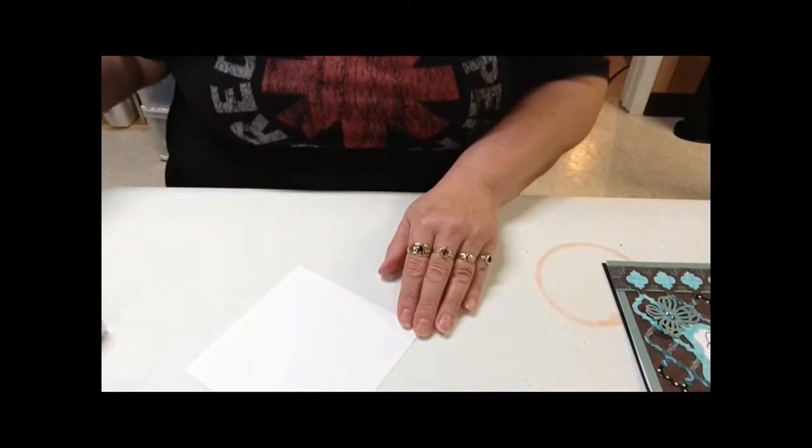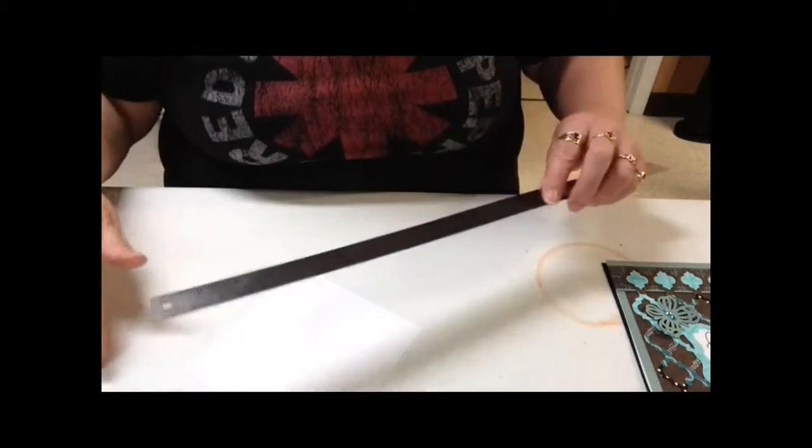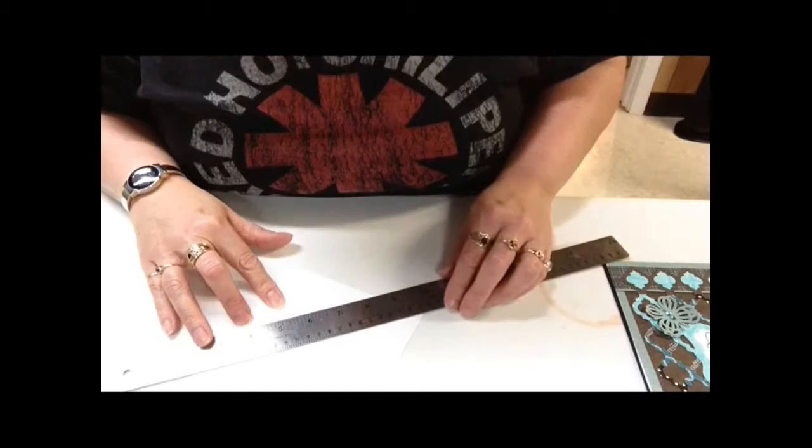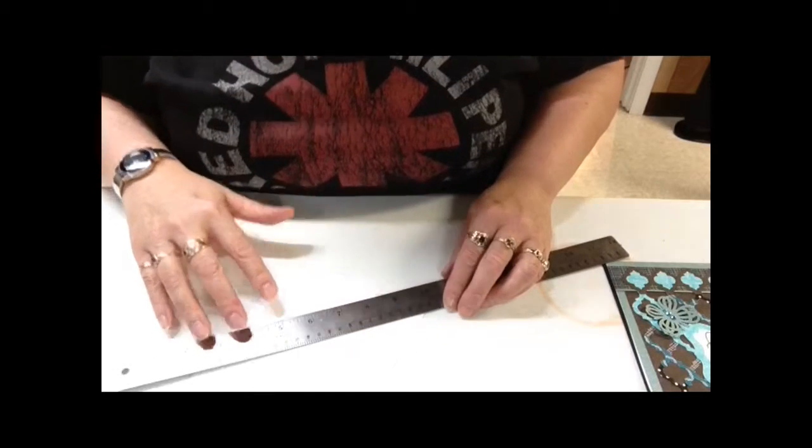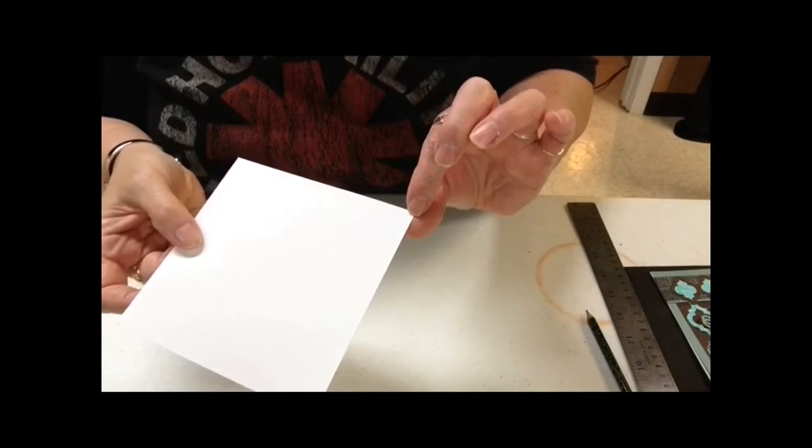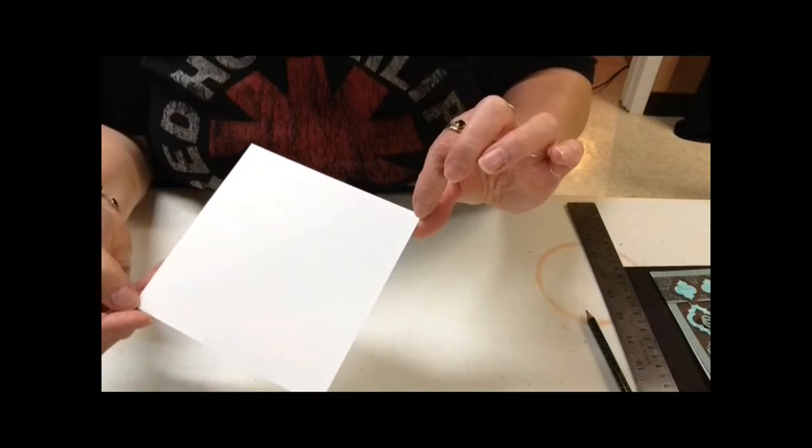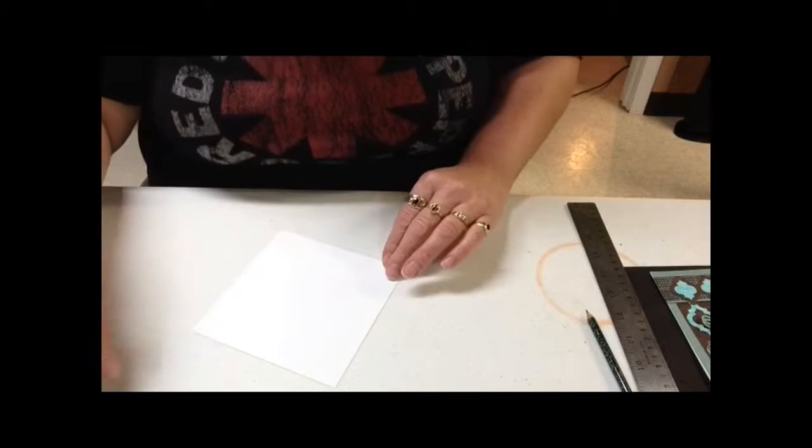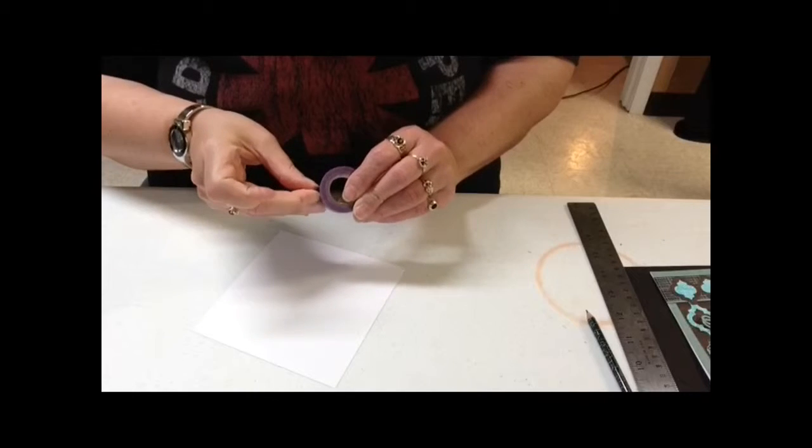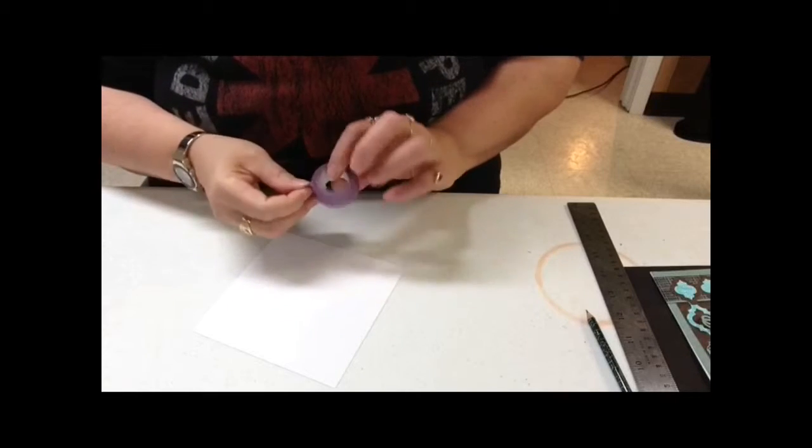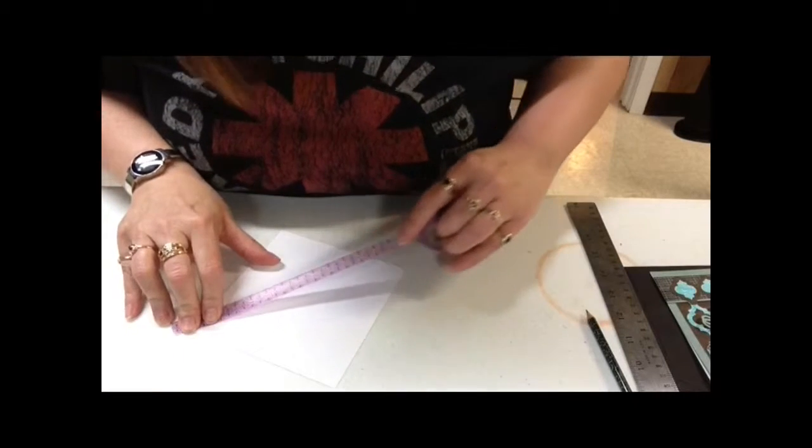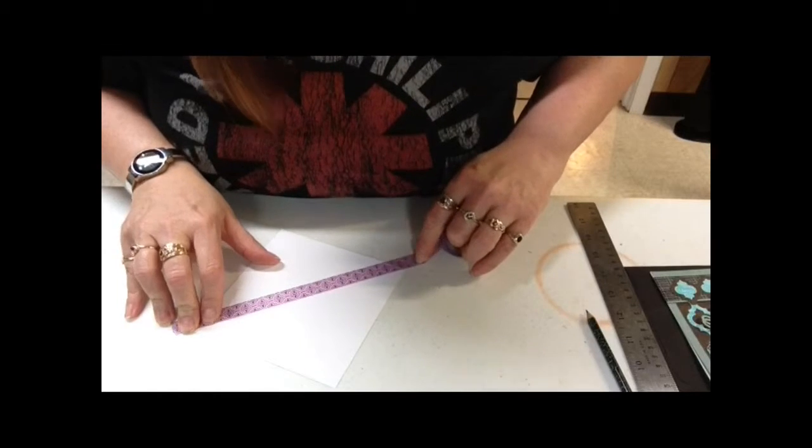And what I've done for this technique is I have measured from corner to corner on a piece of paper. So what I did is I took a pencil and I made just a little mark on each corner, well actually on two corners here diagonally. Then I'm going to take my washi tape and I am just going to take my first piece and line it up to those marks.